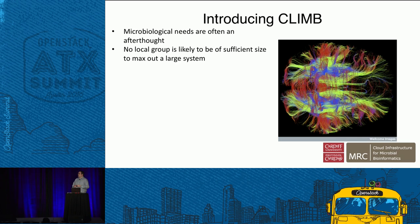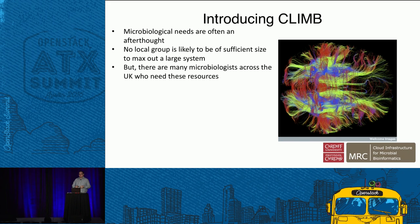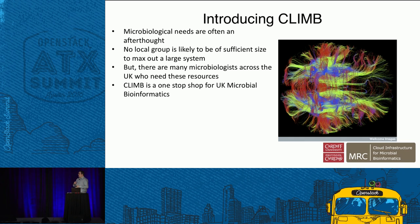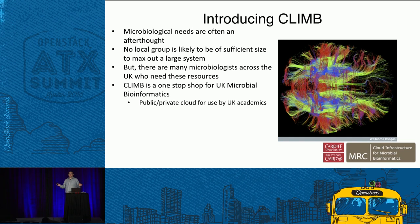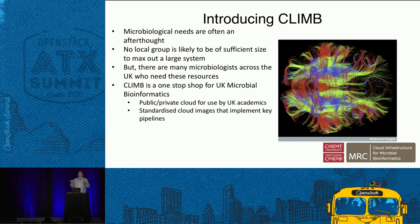No local group is likely to be a sufficient size in terms of income or importance to qualify for having a system of their own, but there are thousands of microbiologists spread across most UK universities who all need these resources. The idea behind CLIMB was to create a one-stop shop for UK microbial bioinformatics — a public-private cloud: public in the sense that if you're a UK academic or part of UK government you can use it for free; private in the sense that if you're not in one of those groups you can't. We have a set of standardized cloud images implementing key pipelines — pre-configured images people can just spin up and use.